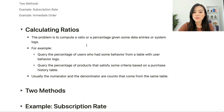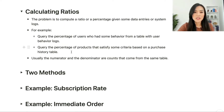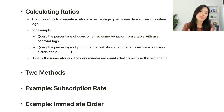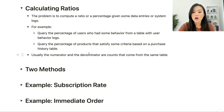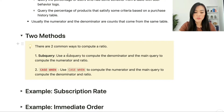What is the calculating ratios problem? The problem is to compute a ratio or percentage given some data entries or system logs. For example: query the percentage of users who have some specific behavior from a table with user behavior logs, or query the percentage of products that satisfy some specific criteria based on a purchase history table. Typically, the numerator and denominator are counts that come from the same table.